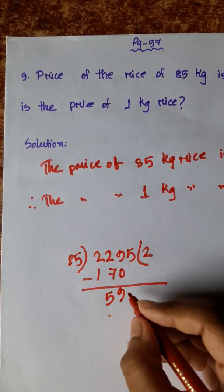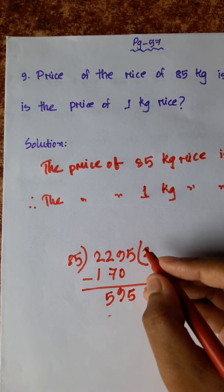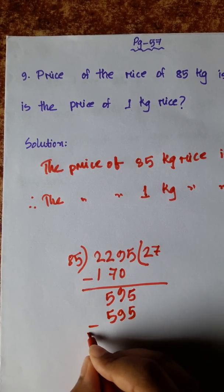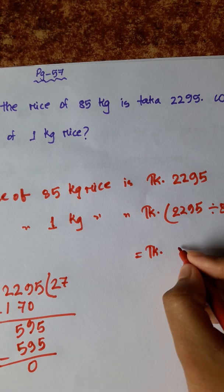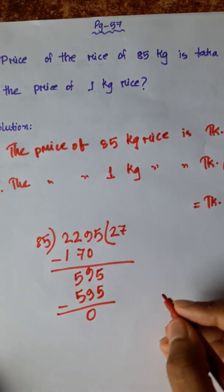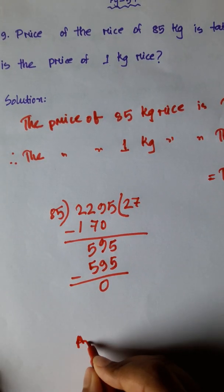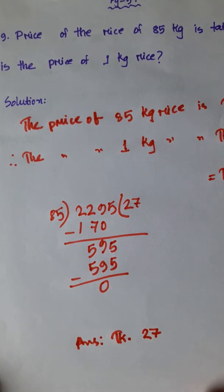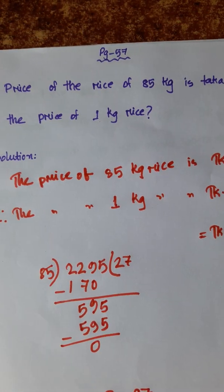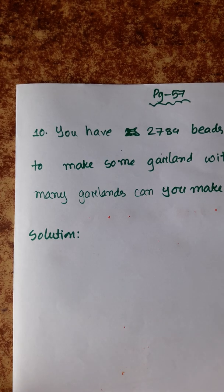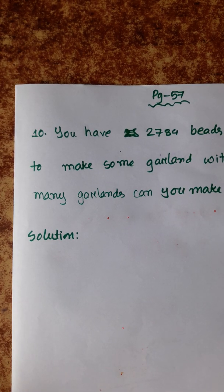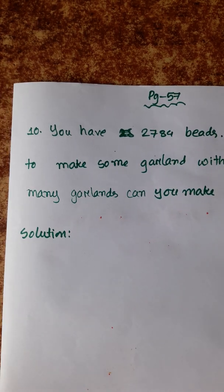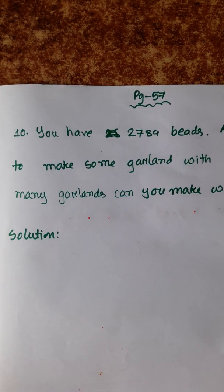85 times 27 equals 2295. So the answer is Taka 27.